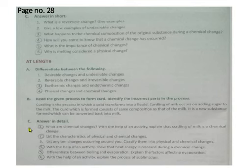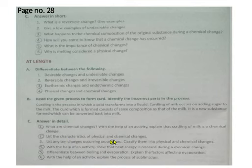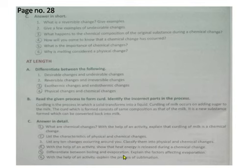Then come to C number: answer in detail. Question 1: what are chemical changes? With the help of an activity, explain that curdling of milk is a chemical change. Question 2: list the characteristics of physical and chemical changes. Question 4: with the help of an activity, show that heat energy is released during a chemical change. Question 5: differentiate between boiling and evaporation, and explain the factors affecting evaporation. Question 6: with the help of an activity, explain the process of sublimation.